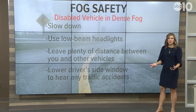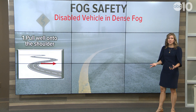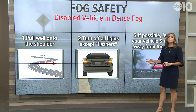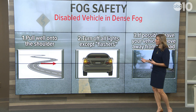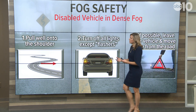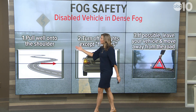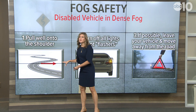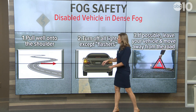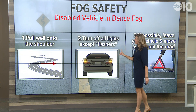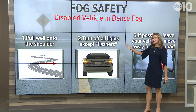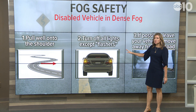Now, let's say your vehicle is the one that's having problems. There are a couple of things that you can do to prevent further disruption of traffic. First of all, you want to pull well onto the shoulder — we're talking well off to the side of the road as safely as possible. Next, turn off all your lights except for your flashers.